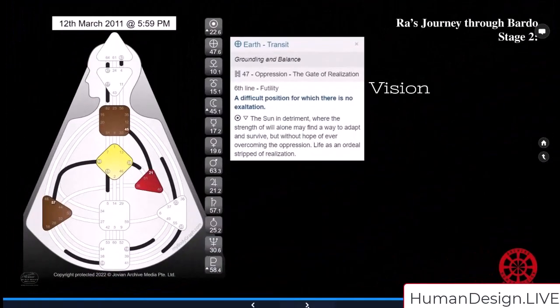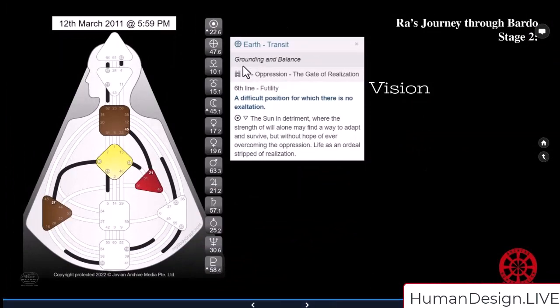Here we have Bardo stage two, Vision. The Earth transit was going through, again, still the Oppression, Gate of Realization. Sixth line, Futility. A difficult position for which there is no exaltation. It's a bold blue line, burning line. The Sun in detriment, where the strength of will alone may find a way to adapt and survive, but without hope of ever overcoming the oppression. Life as an ordeal, stripped of realization.